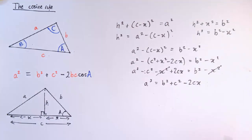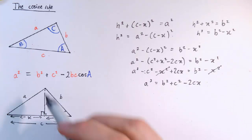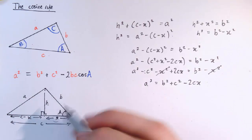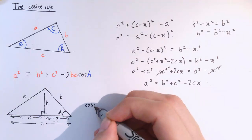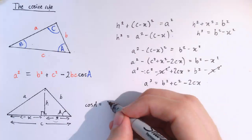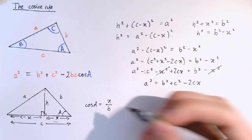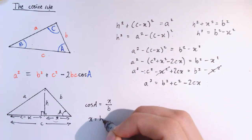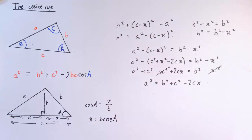This is almost looking like the cosine rule now. And to get the cosine rule, we've just got to look at this triangle here and say, what was x in terms of b and a? And again, this is a right-angled triangle. And so we've got the cos a is equal to the adjacent divided by the hypotenuse, which is equal to x over b. So x equals b times the cosine of a.